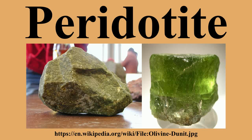Classic peridotite is bright green with some specks of black, although most hand samples tend to be darker green. Peridotite outcrops typically range from earthy bright yellow to dark green in color, because olivine is easily weathered to iddingsite. While green and yellow are the most common colors, peridotite rocks may exhibit a wide range of colors such as blue, brown, and red.